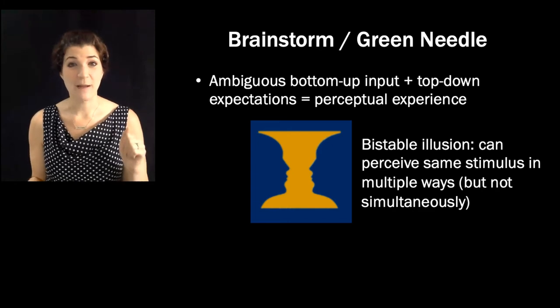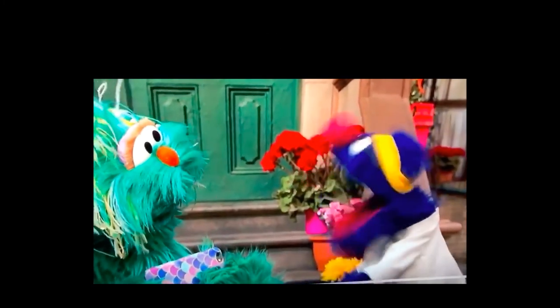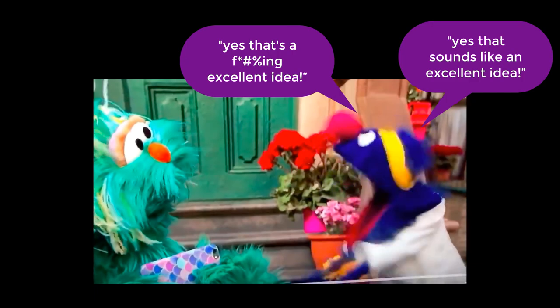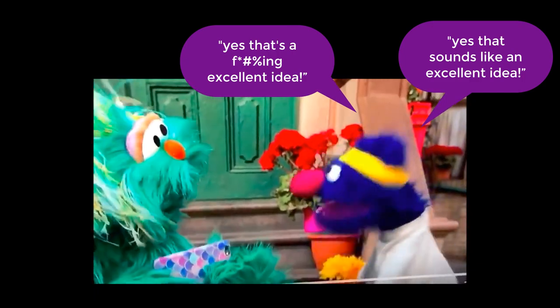Here's another great example of a bistable, ambiguous speech illusion: 'Yes, that sounds like an excellent idea'. Normally, I don't include swearing in my lectures. But, you know what, I'm not including swearing in my lectures. Grover is actually saying, 'yes, that sounds like an excellent idea'. And the naughty words are all coming from your brain. So tsk tsk. So again, we have ambiguous input. That is, the bottom-up signal shares some features with both interpretations, and we're able to top-down our way into either interpretation. So both Green Needle Brainstorm and Naughty Grover are bistable in that they can be interpreted in two ways, and most people can flip back and forth between hearing either.